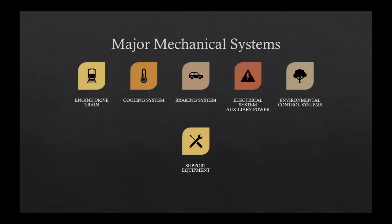Our major mechanical systems include the engine and drivetrain — engine and transmission — our cooling system including the radiator, the braking system with brakes, rotors, and drums, the electrical system, and your auxiliary power, which is typically the inverter that runs all the equipment in the back. Environmental control systems like air conditioning and heat, support equipment including lights in the back of the ambulance, plug-ins for equipment, your CAD system, reporting system, and radio system — all of it needs to be functioning.